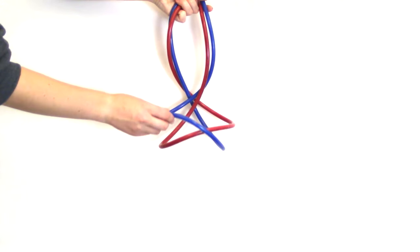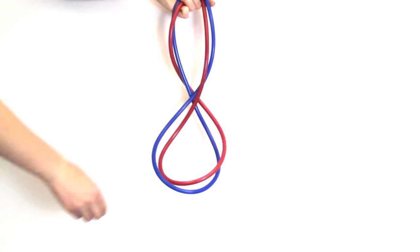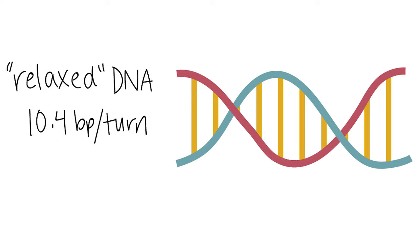The two strands of the double-stranded DNA can be separated more easily. But if DNA is least strained in the relaxed form, how does the double helix change from being relaxed to overwound or underwound? And how does positively or negatively supercoiled DNA return to a relaxed state?